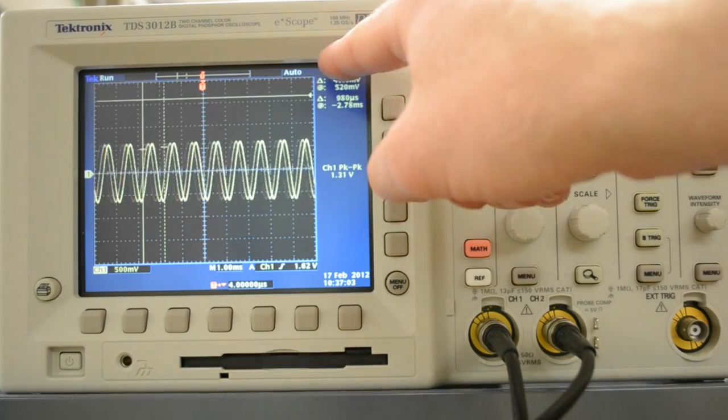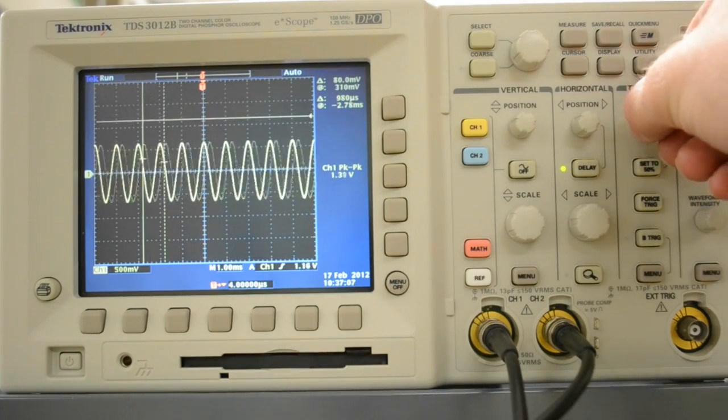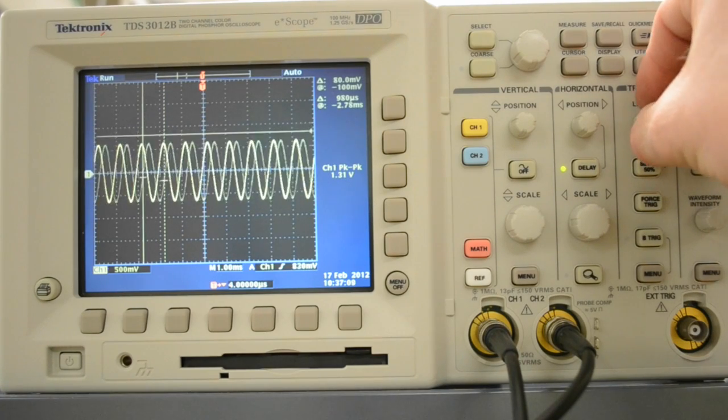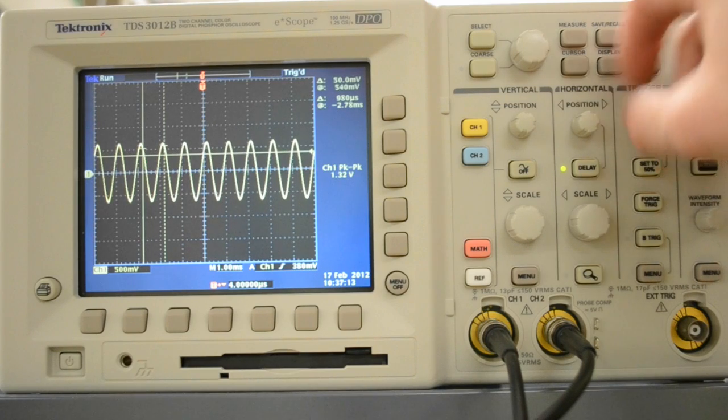Notice the arrow went from upward to horizontal. I'll adjust the trigger down until we get into our wave, which should stop that oscillation.